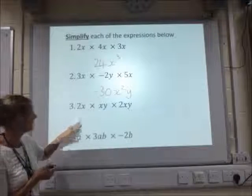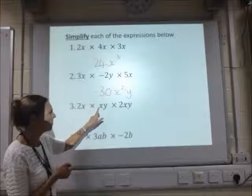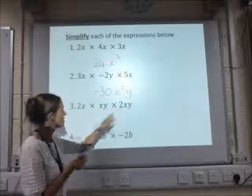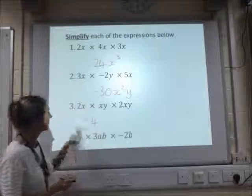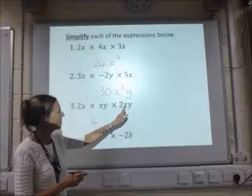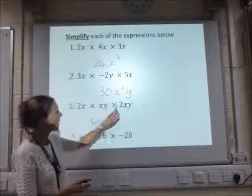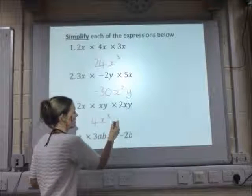Next one, again I'm going to go for numbers first. 2, there's a number 1 there that we don't write in. So 2 times 1 is 2, times 2 is 4. x times x times x times x is x cubed. And then there's just a y times y, which is y squared.